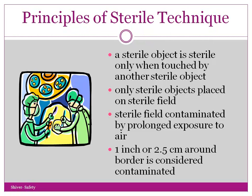The principles of sterile technique: a sterile object is sterile only when touched by another sterile object. Only place sterile objects on your sterile field. A sterile field can be contaminated by prolonged exposure to air, so we don't need to have our sterile field open for a prolonged period of time. Also, once a sterile field becomes wet, it is no longer sterile — remember, wet equals bacteria. One inch or 2.5 centimeters around the border of a sterile field is considered contaminated, so make sure you put all supplies in the middle of your sterile field.